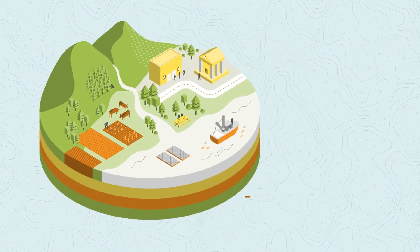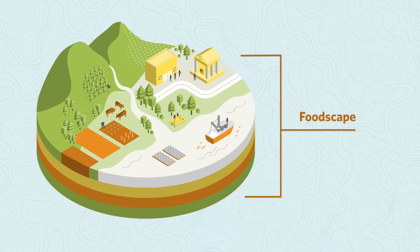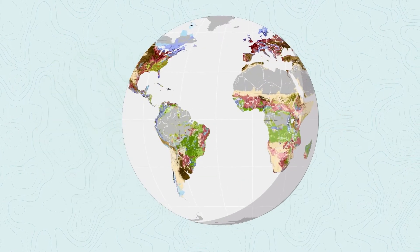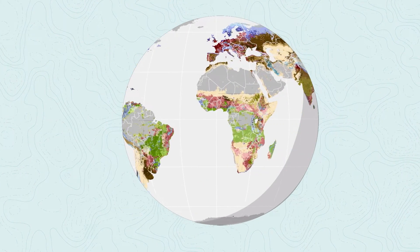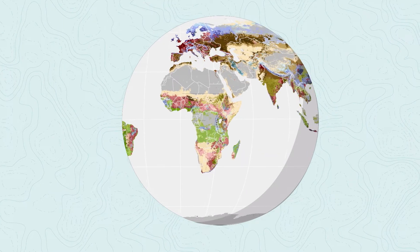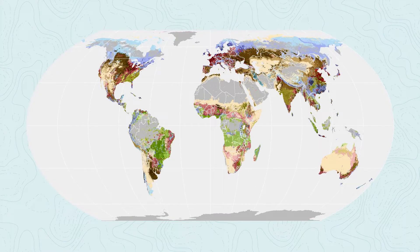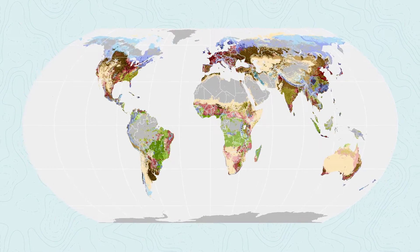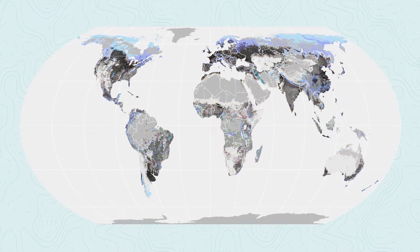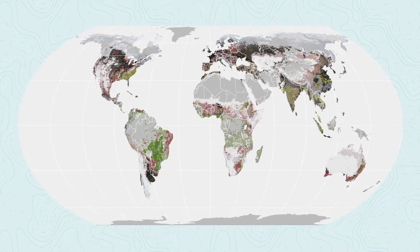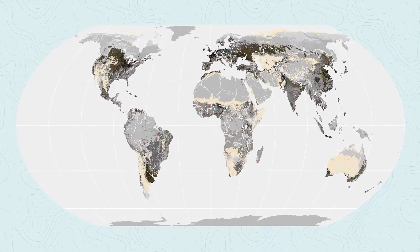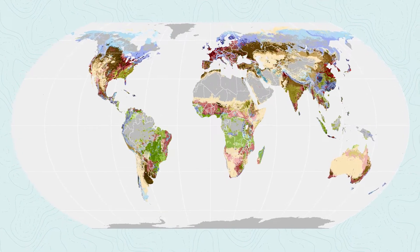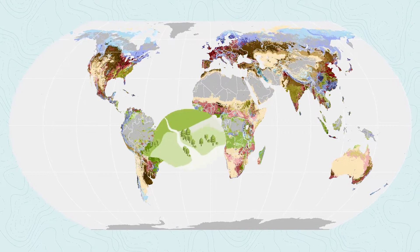These layers overlap to create what we call a food scape. All of these deliciously diverse food scapes add up to create a complex global food system. But that's not all — food scapes also hold the key to changing the whole system for the better. Through the diversity and complexity of our global food scapes, we can showcase the food economy as a powerful tool for positive change for both people and the planet. Let's take a closer look.